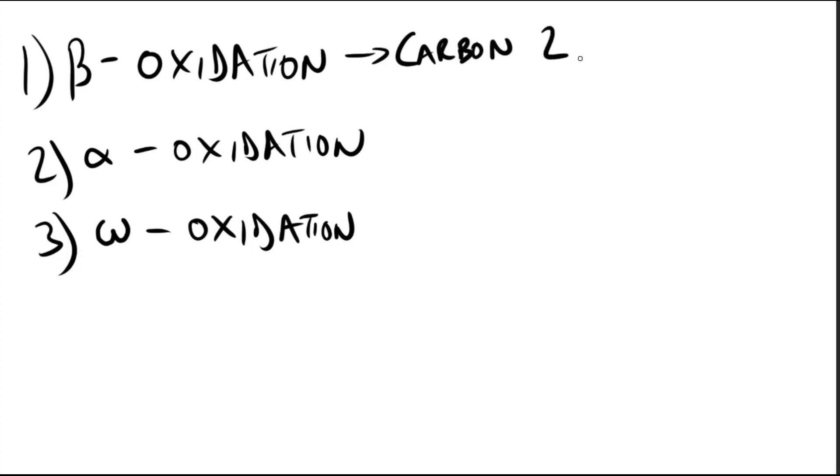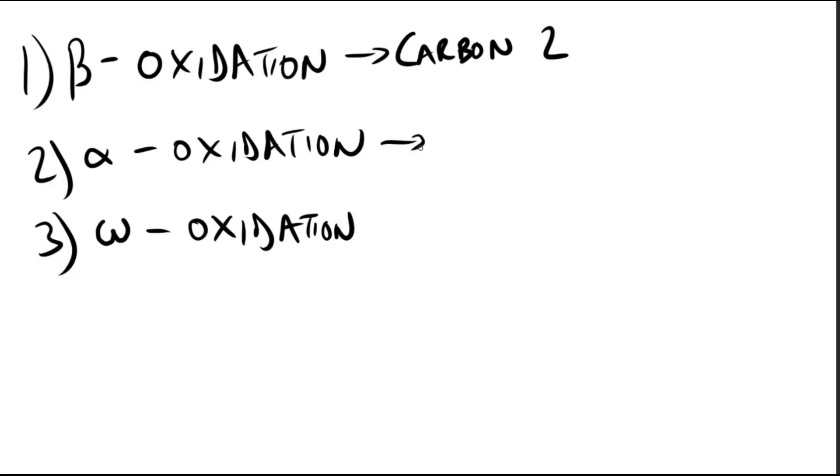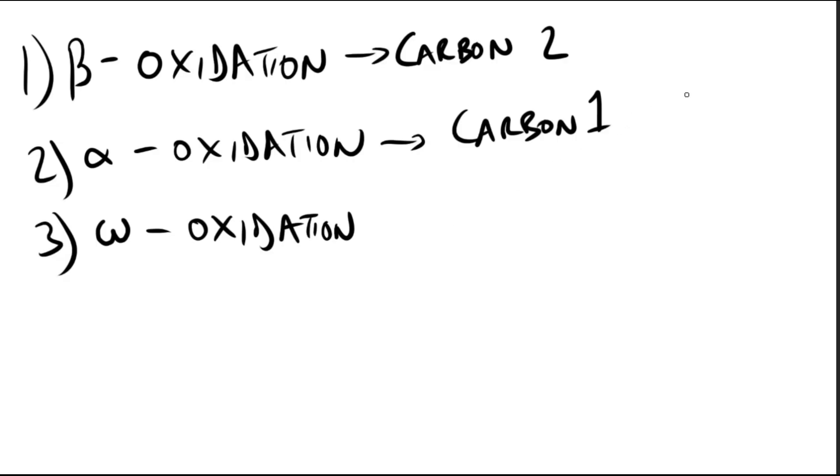We also have alpha oxidation, which is a branched chain 20-carbon fatty acid called phytanic acid. It is hydroxylated at the alpha carbon by phytanoyl coenzyme A alpha hydroxylase. The carbon 1 is released as carbon dioxide, and the product is 19-carbon pristanic acid.